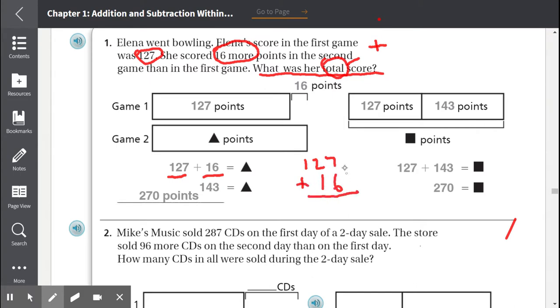The first game was 127 points. The second game, they didn't tell us, but they gave us a hint. It was 16 more than what she scored in the first game. So we add 16 to it to get the score of the second game. 127 plus 16, we start with the ones place. 7 plus 6 is 13. We carry our 1. 1 plus 2 is 3, 3 plus 1 is 4. And the hundreds place, it's only the 1, so we just bring it down. So in the second game, she scored 143.